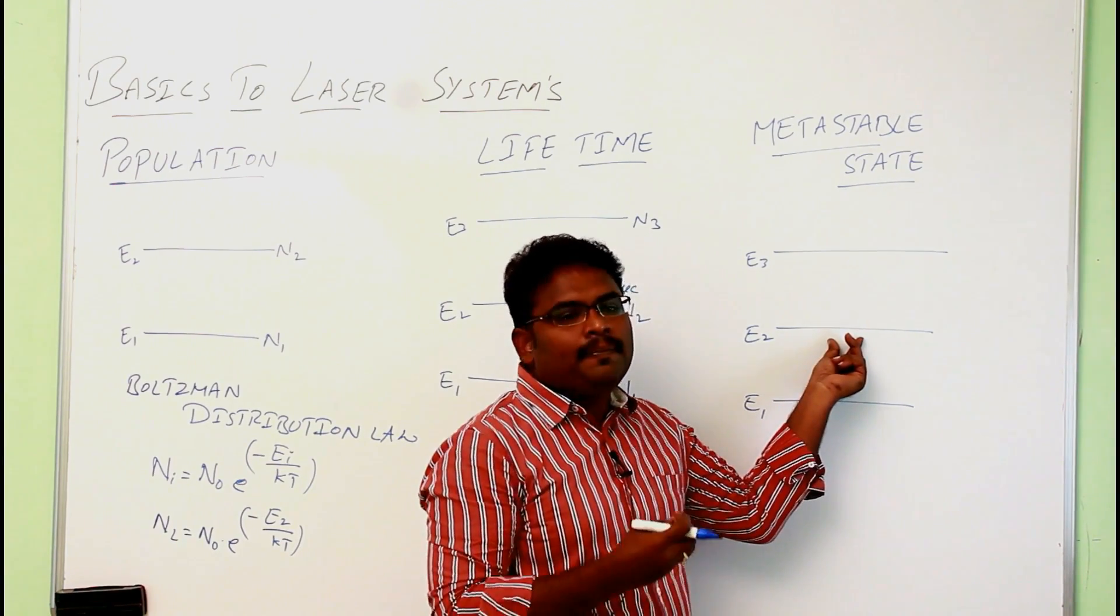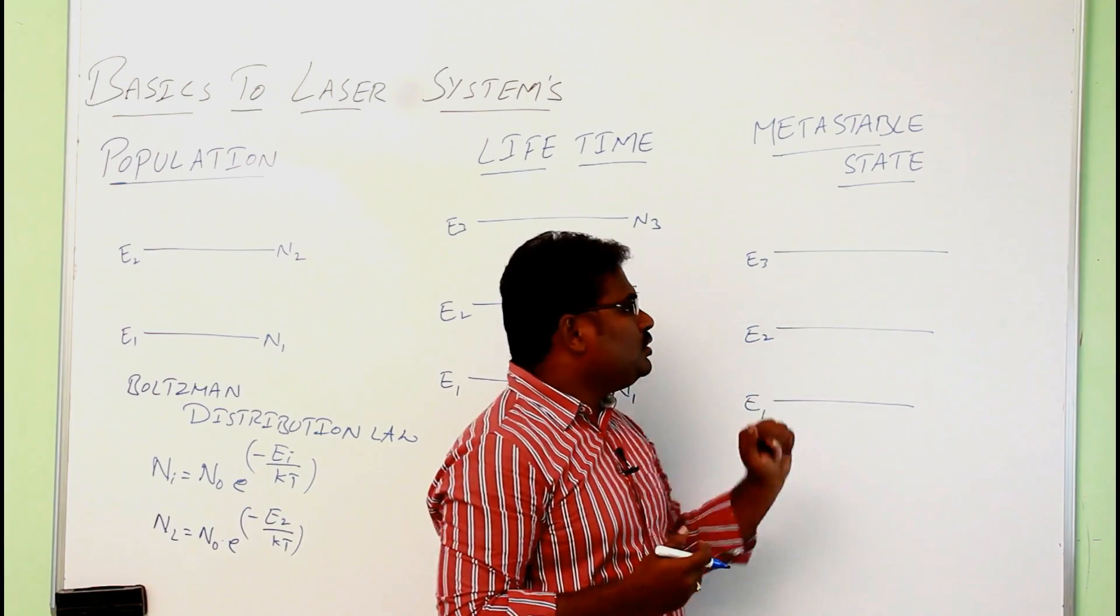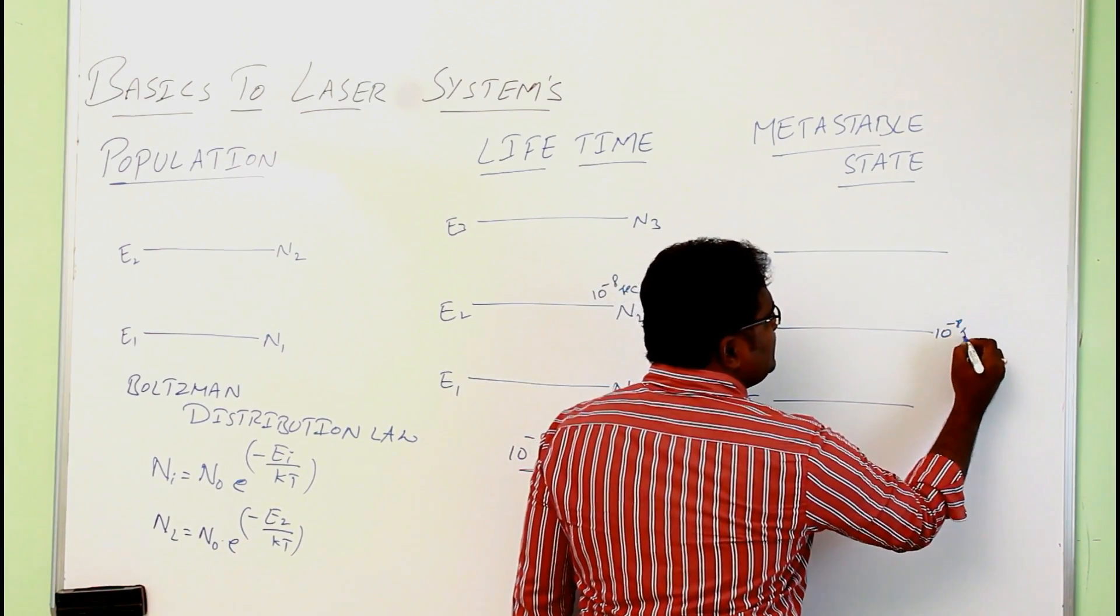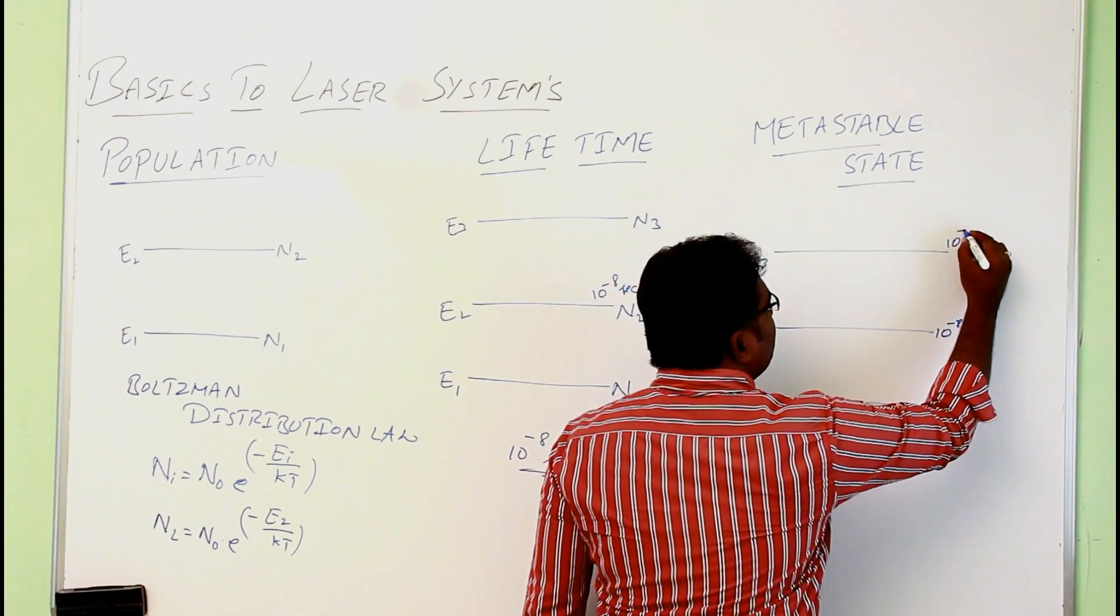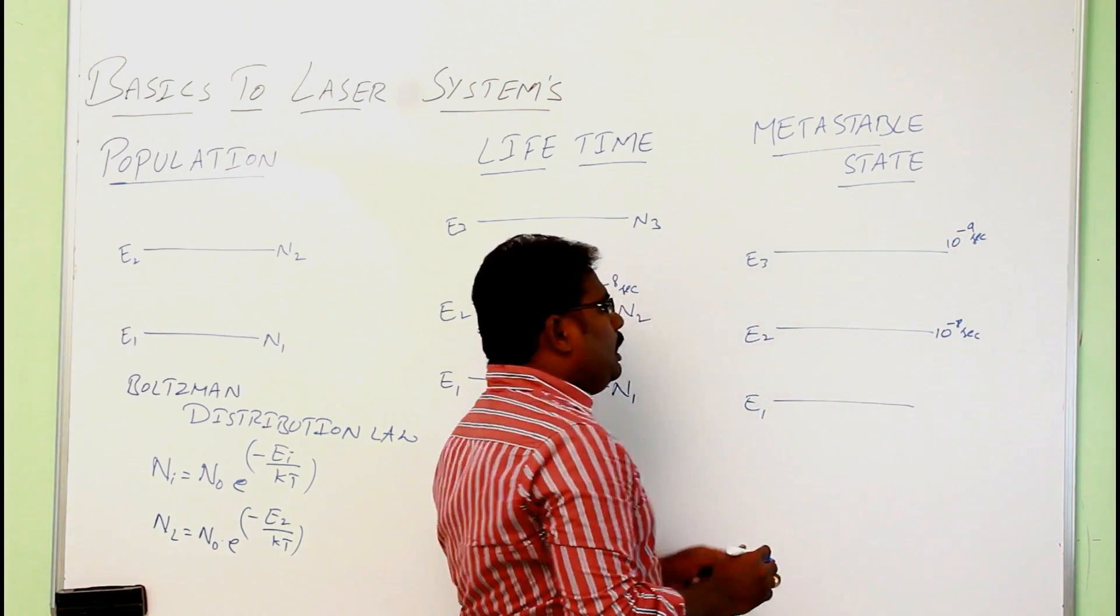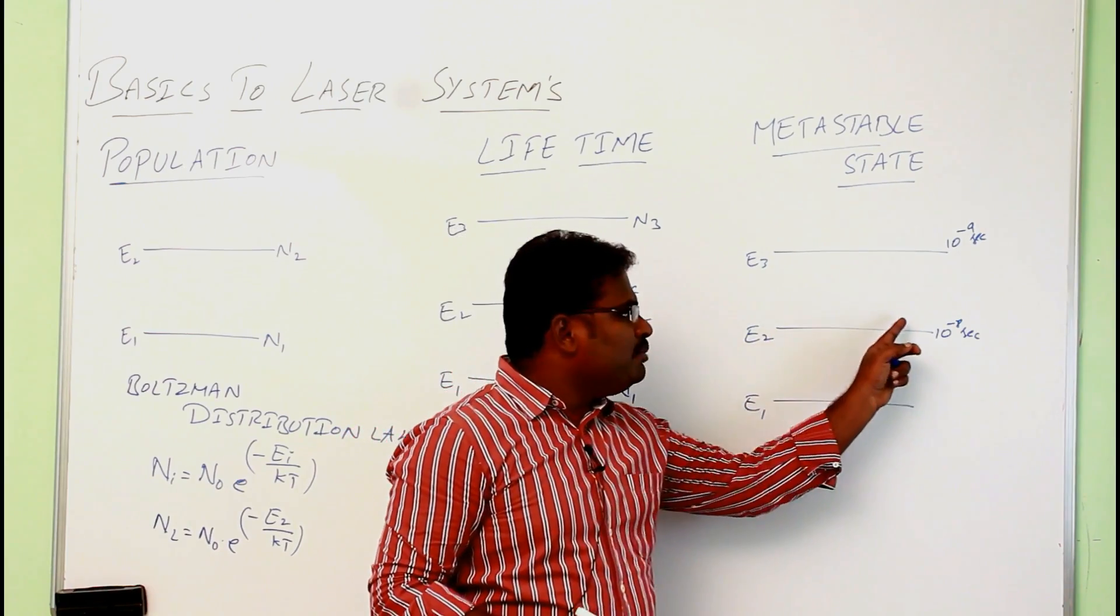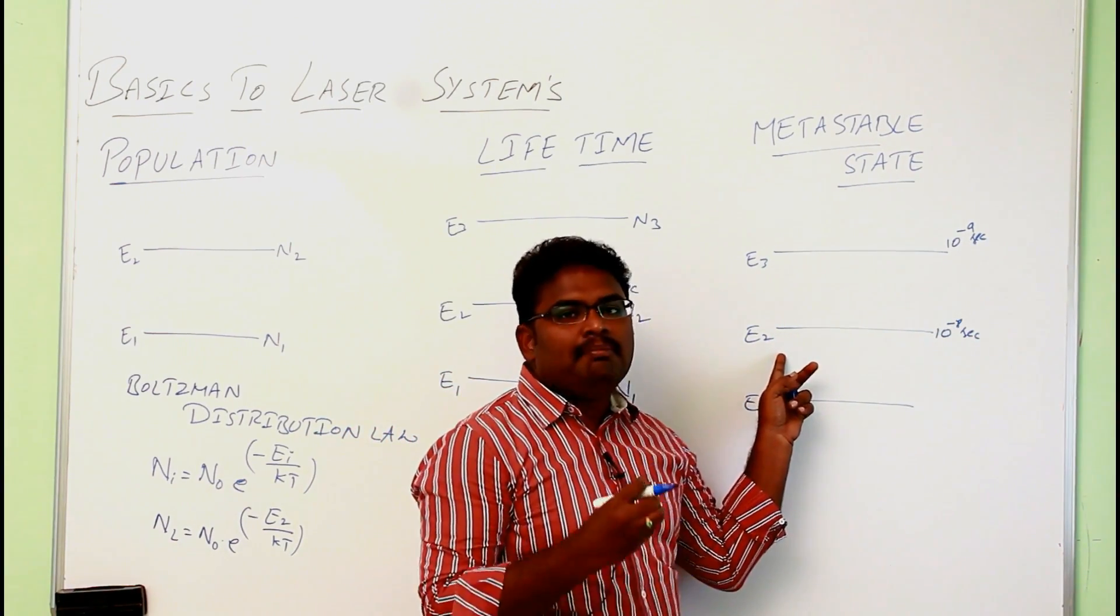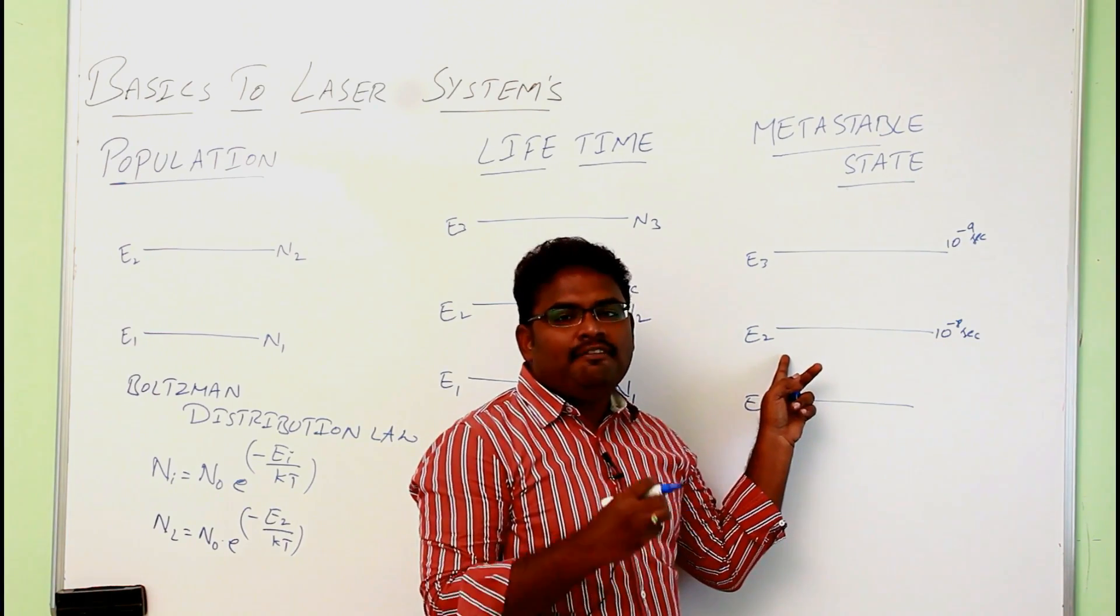So suppose here if it spends 10 power minus 8 seconds and if it spends 10 power minus 9 seconds, then out of these three, the electron is spending more time in E2 level. So E2 level can be considered as the metastable state.